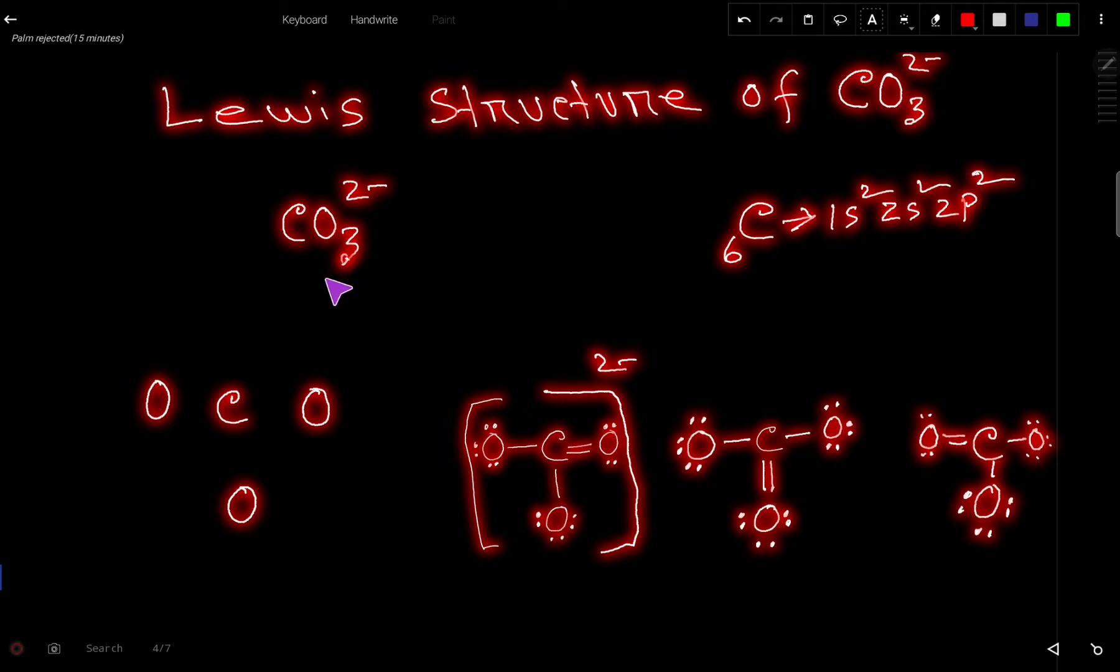First we have to find out the valence electron for CO₃²⁻. Carbon is the element of group 4A, that is why it has 4 valence electrons. Oxygen is an element of group 6A, that is why it has 6 valence electrons. But here we have 3 atoms of oxygen, so we need to multiply by 3. And for the 2- negative charge, we have to add 2 more extra electrons.